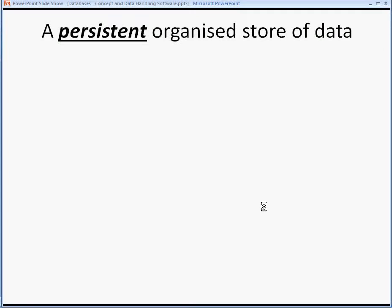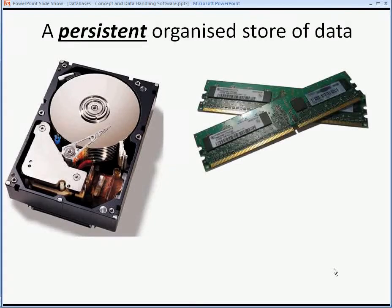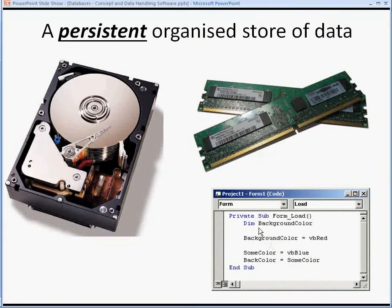Databases are described as persistent as well as being an organized store of data. This refers to electronic databases only, in that data is saved to a hard disk, therefore it is persistent — it stays on the hard disk. Unlike storing something temporarily on RAM (random access memory), where a value within a variable would only be temporary, data saved to a hard disk is persistent and permanent.